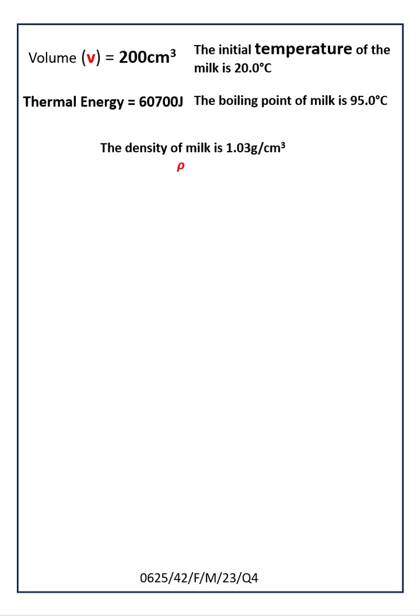We are supposed to find specific heat capacity. The equation is C equals delta E divided by m delta theta. Let's check what data are available. Delta E is given in the question, that is thermal energy.